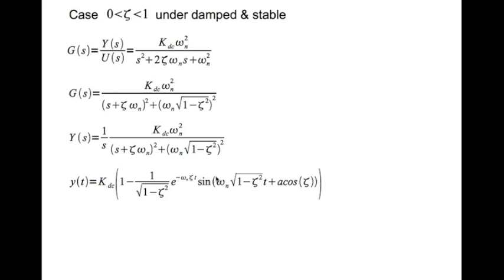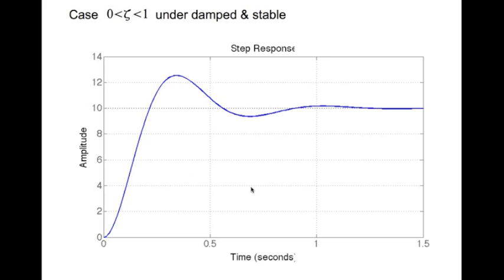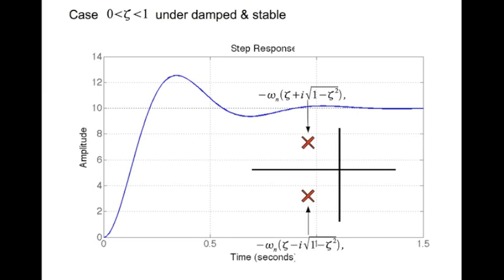This expression is nothing but an exponentially decaying sine term. And if you look at the plot, this is what it looks like. Plotting the poles of the transfer function in the complex plane looks like this — and this is the complex pair.